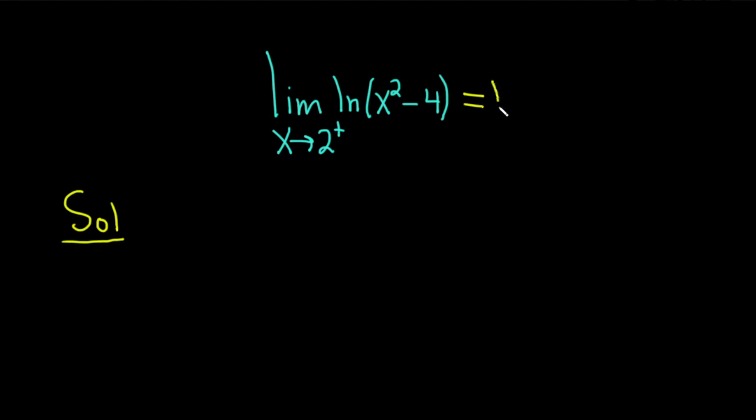you drop the limit sign and you get the natural log of 2 squared minus 4. You get the natural log of 4 minus 4. You get the natural log of 0, which is undefined. So that doesn't work.